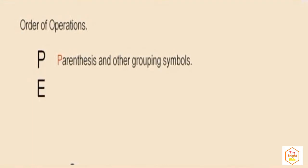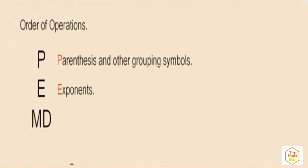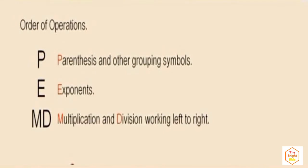Our next thing is E for exponents — we just reviewed that. Now, the next part is MD. A lot of people get this wrong, thinking it means do multiplication before division. That's not what this says. There are only four parts: parentheses, exponents, and then multiplication and division. You've got to do these operations working left to right, whichever comes first.